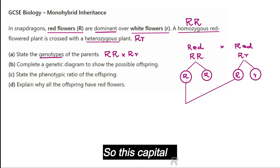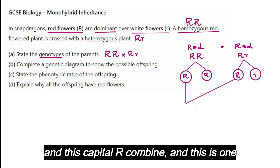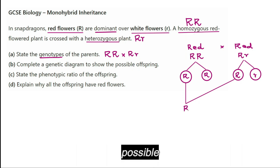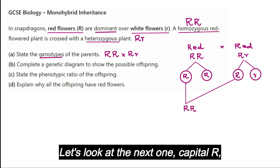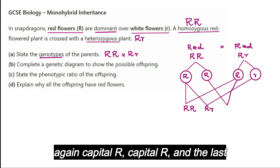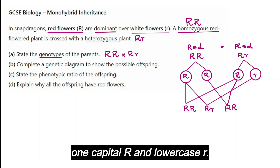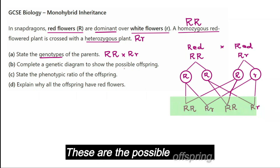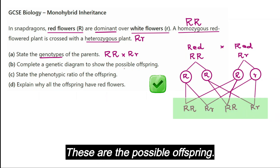Now let's look at the offspring. Capital R and capital R combine as one possible offspring. The next is capital R lowercase r. Then capital R capital R again, and the last one capital R lowercase r. These are the possible offspring.